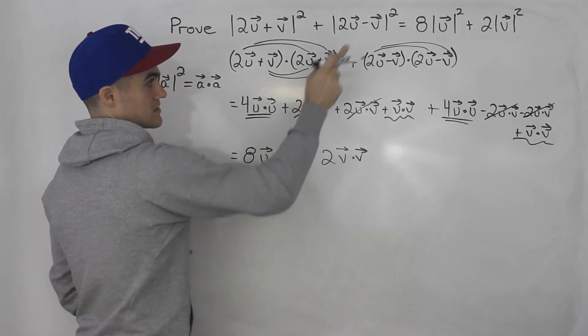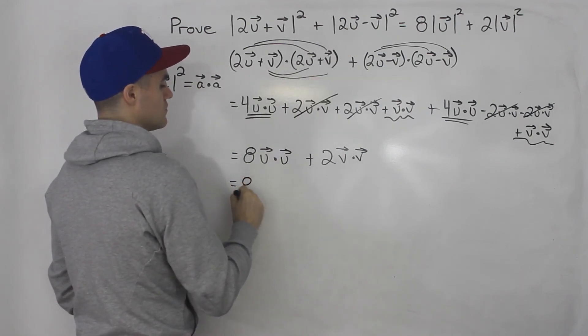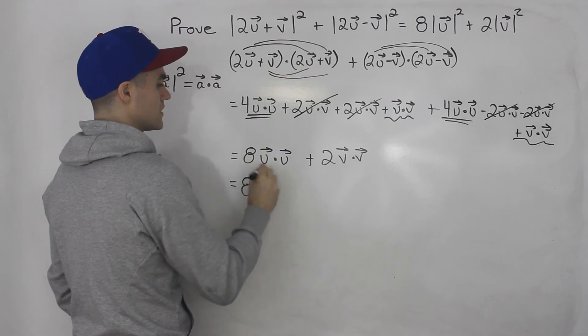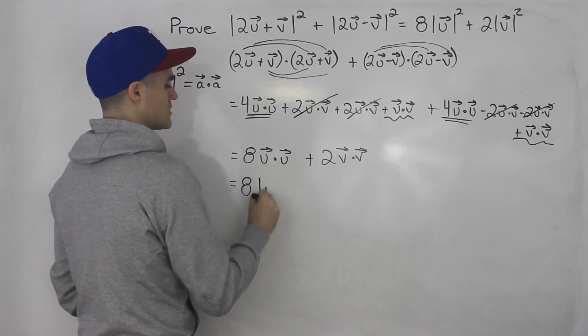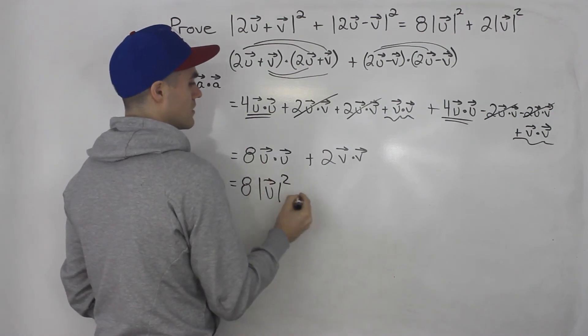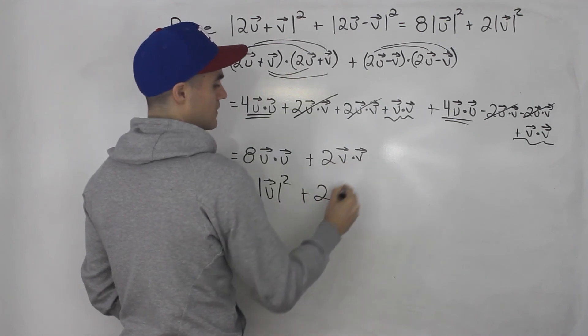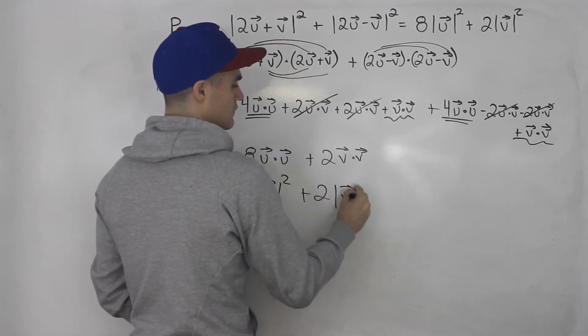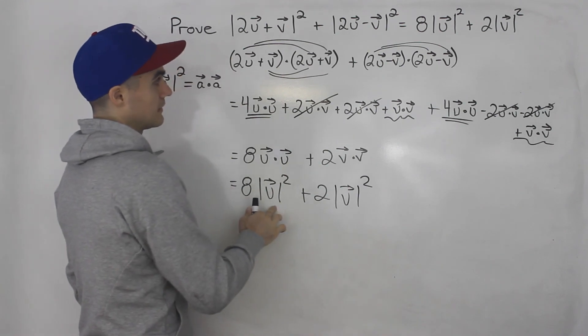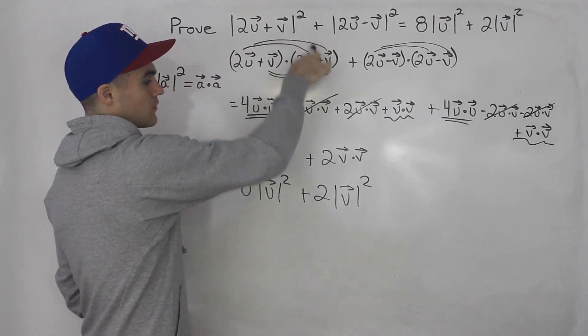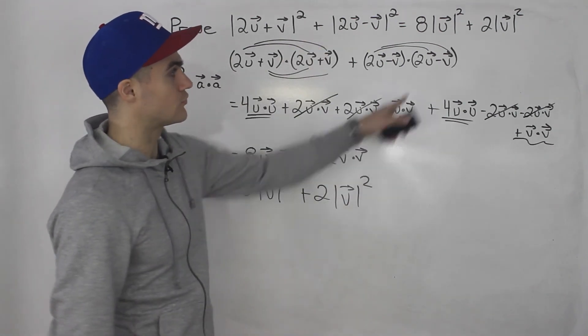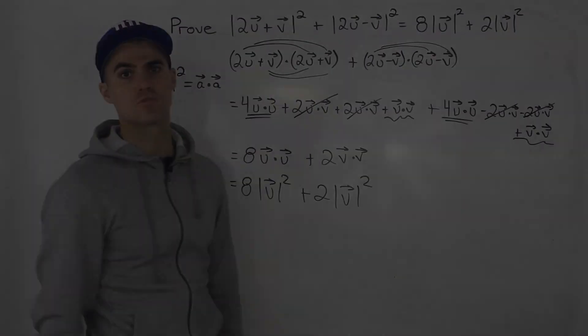And notice that this is basically equal to that right side, because u dot vector u is just the magnitude of u squared plus 2. And then v dot vector v, that's just the magnitude of v squared. So we made the left side with all this algebra equal to the right side. So we proved it.